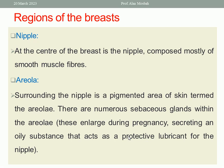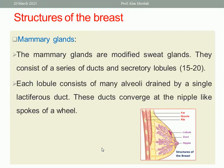The sebaceous glands in the areola secrete an oily substance that acts as a protective lubricant for the nipple during pregnancy, to give help during breastfeeding. Regarding structures of the breast, we have mammary glands and ducts. Mammary glands are modified sweat glands, consisting of a series of ducts and secretory lobules — from 15 to 20 lobules in number.